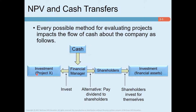Any project that generates a rate of return higher than the return shareholders could earn from investing in financial assets should be accepted. In other words, any project whose cash flows, discounted by the shareholders' required rate of return, yield a positive NPV should be accepted; otherwise it will be rejected.